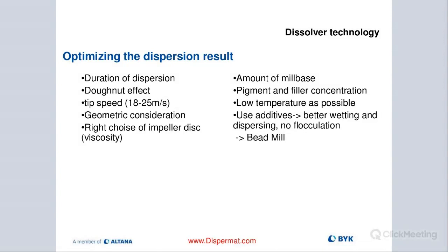That is also available on the higher-end models. In order for us to optimize our dispersion result, duration plays a role — we are looking between 10 to 30 minutes, sometimes a little bit longer, but that's a good number for the pre-dispersion. We want to see a donut effect. The tip speed is very important — try to stay within 18 to 25 meters per second. Not enough tip speed means we won't get results in a timely fashion, or may never get there.